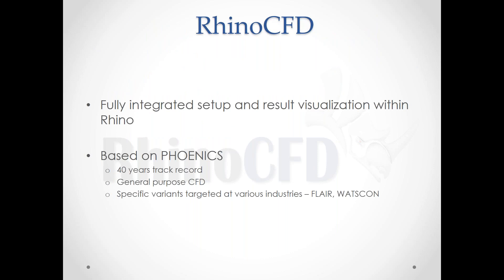Rhino CFD is a fully integrated setup within Rhino. Our aim was to take our main software, PHOENICS — which was the very first commercial CFD code ever produced, some 40 years ago — and allow Rhino users to use it without the learning curve of a new piece of software. Both Rhino CFD and PHOENICS are general-purpose CFD codes, meaning that anything you can dream up you should be able to solve within Rhino CFD.